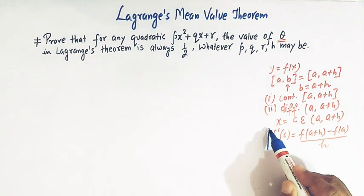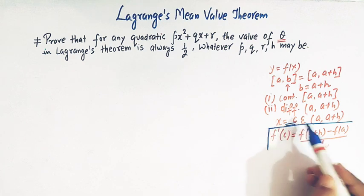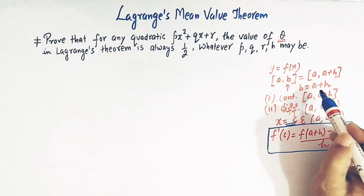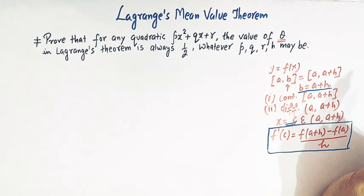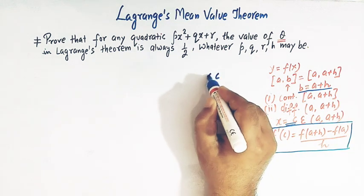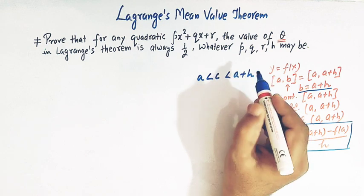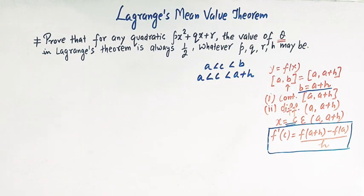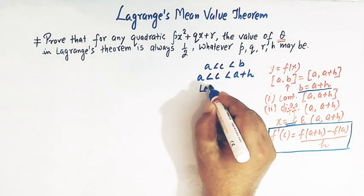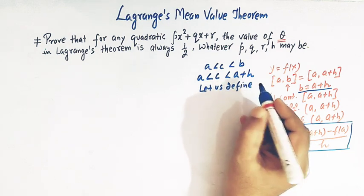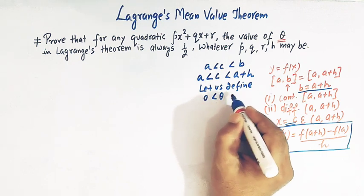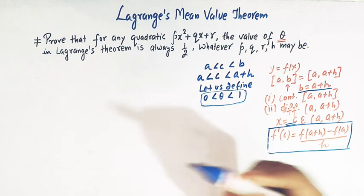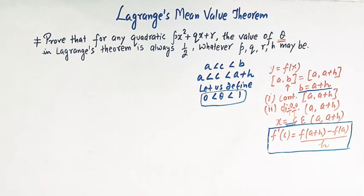So Lagrange's mean value theorem gives us the derivative at the point x equals c as f prime of c, which equals f of a plus h minus f of a divided by h — remembering that b equals a plus h. Now this point c lies between a and a plus h. Let us define a quantity theta such that theta lies between 0 and 1. This theta is a very important quantity in defining Lagrange's mean value theorem in a somewhat different way.